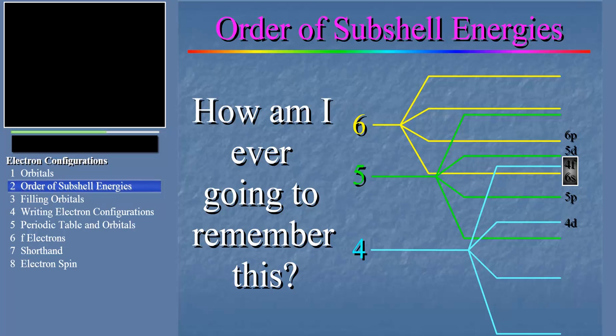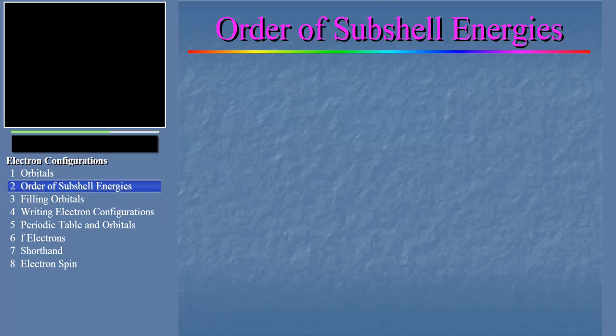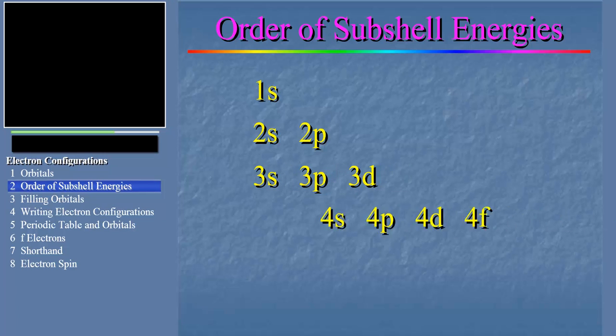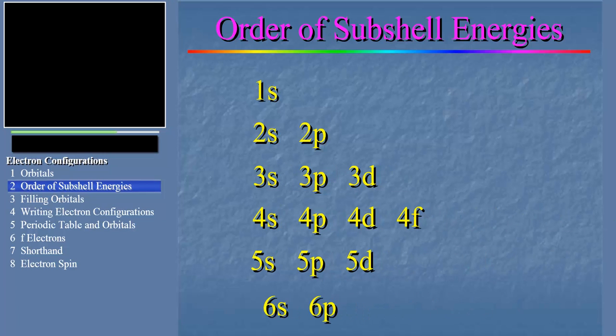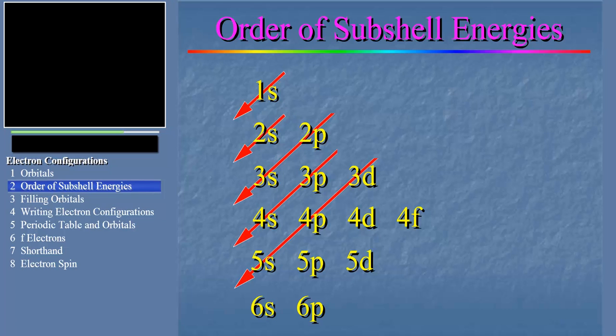Take a look at this. We list the shells with their subshells line by line. Then we draw arrows down through the list in this pattern. Notice especially that the first two arrows go through single subshells, the 1s, then the 2s, then through multiple subshells. Now, if we follow the arrows, we see the correct order of energies. Let's make a list.